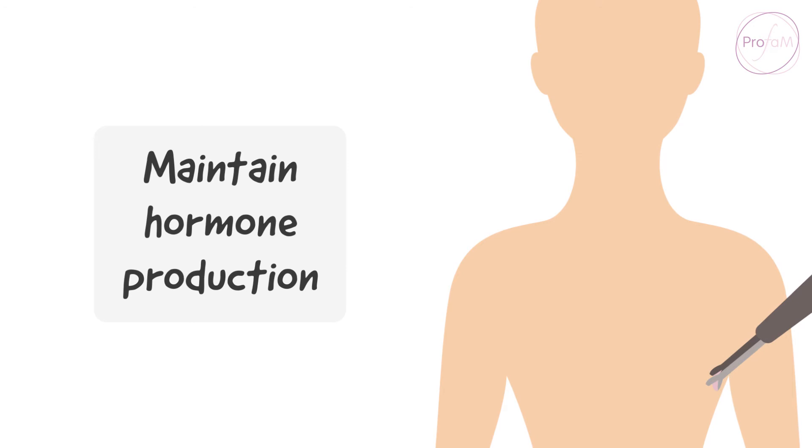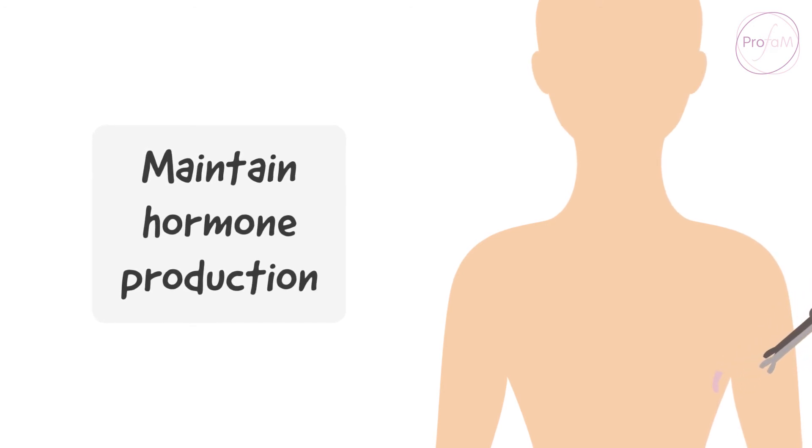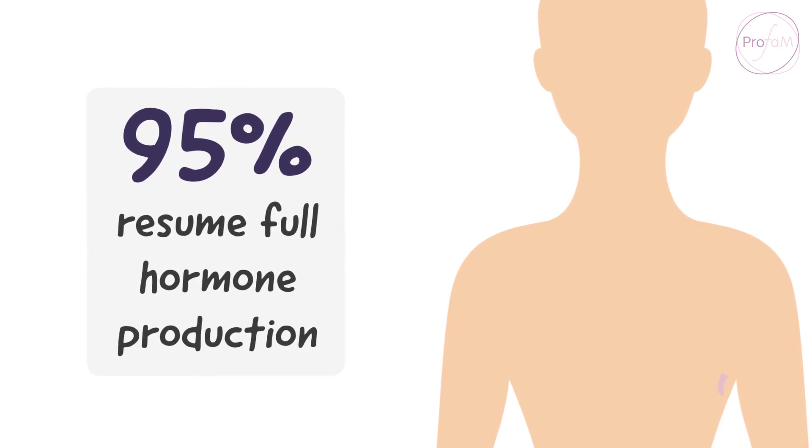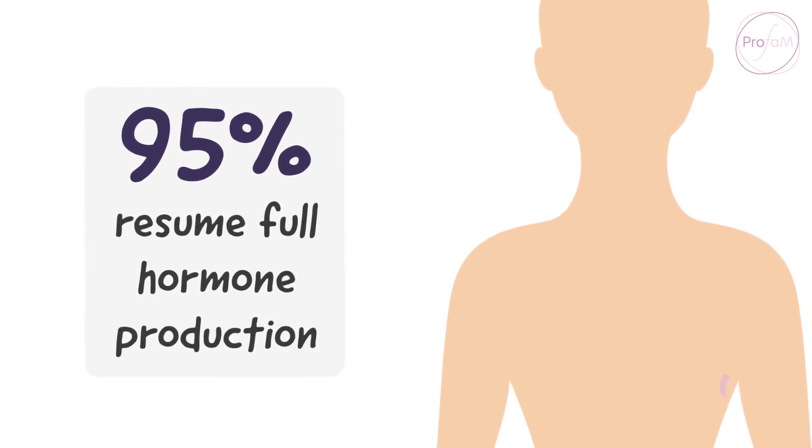in which case it can go under the skin, for example, under the armpit. By six months after the graft, more than 95% of women resume full hormone production.